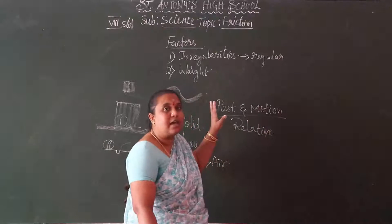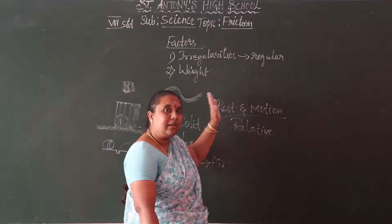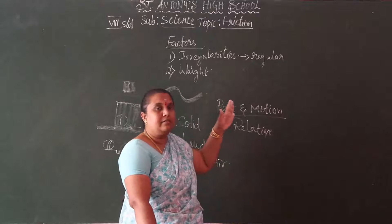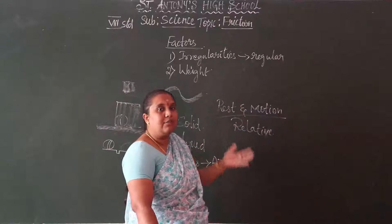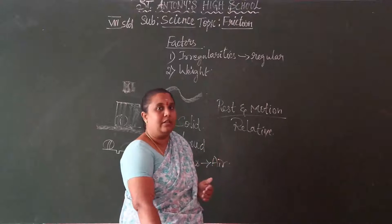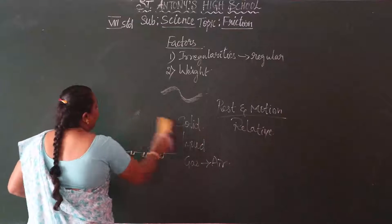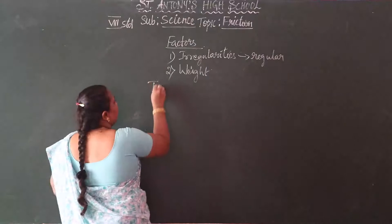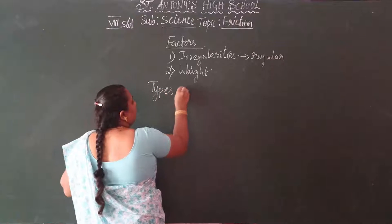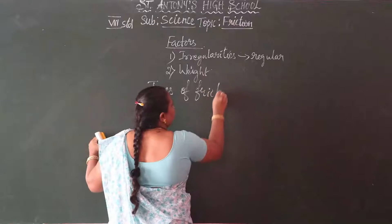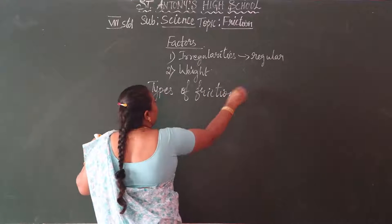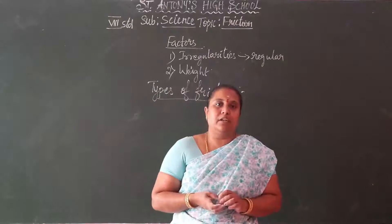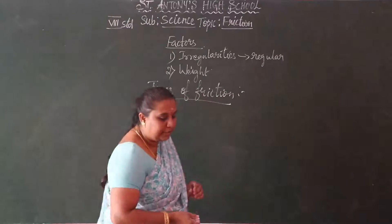What are the factors affecting friction? That is irregular surfaces and weight of the objects. And based on this, we have types of friction. So what are the types of friction? We have four types of friction.